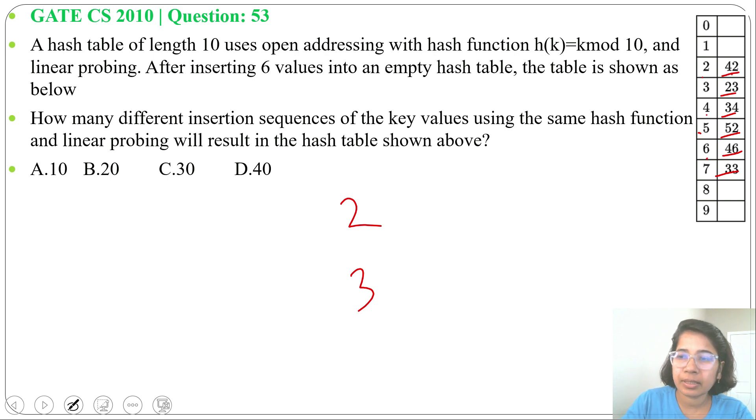So in this sequence 33 should be at end and 52 can come after 42, 23, 34. That is one way. Another way it can come after 42, 23, 34 and 46. 46 present or absent will not affect 52.